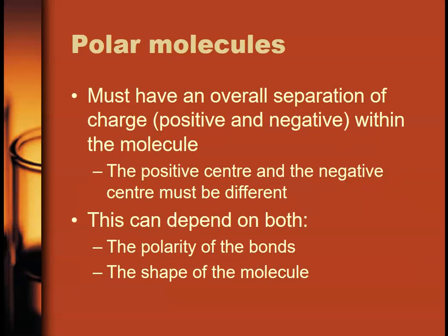Okay, so a polar molecule, to be polar, a molecule must have an overall separation of charge. There must be a positive end in the molecule and a negative end in the molecule. Or the centre of the positive charge and the centre of the negative charge must be in different places. This comes down to two things, the polarity of the bonds and the shape of the molecule which determines the distribution of that polarity around the central atom.